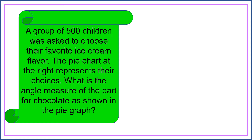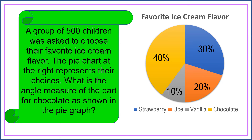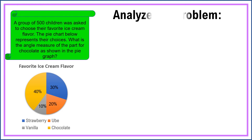Our second problem is a non-routine problem. A group of five hundred children was asked to choose their favorite ice cream flavor. The pie chart at the right represents their choices. What is the angle measure of the part for chocolate as shown in the pie graph? To solve this problem, we're going to analyze and apply some non-routine principles in mathematics. The problem is asking for the angle measure of the part for chocolate, which is 40 percent.